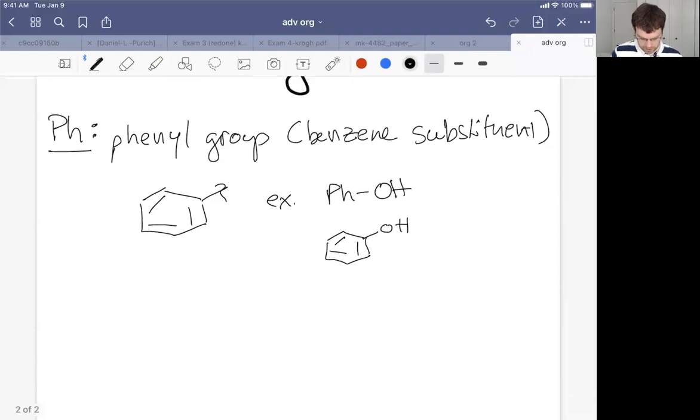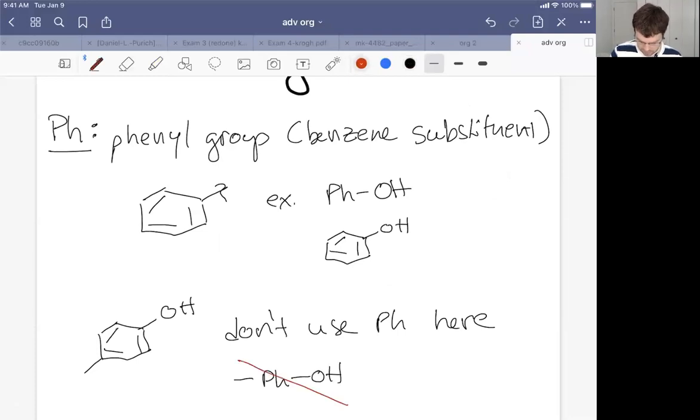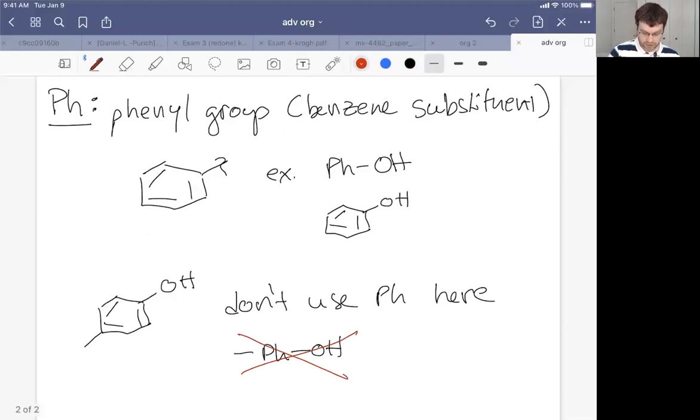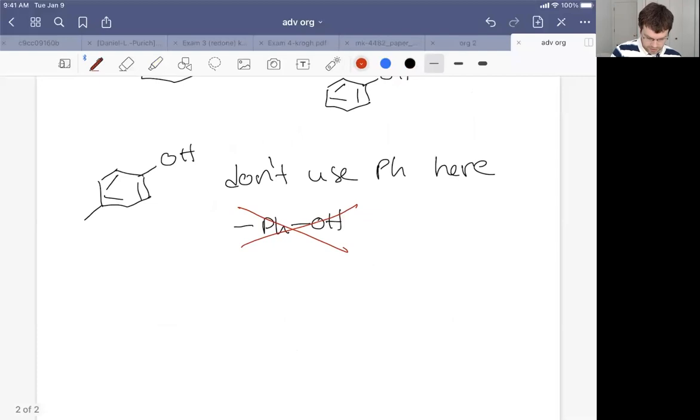An example would be if we had phenyl-OH, that would be the same as a benzene ring with an OH attached to the ring. You have to be a little bit careful. If you have a more complicated benzene ring, that is one with two substituents, you would not put like a methyl and an OH attached to the Ph. So don't use Ph here. It's just a benzene with one substituent.